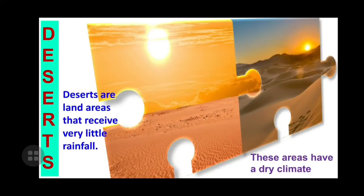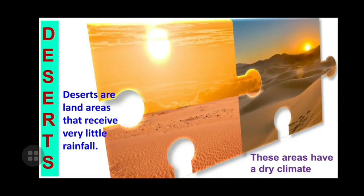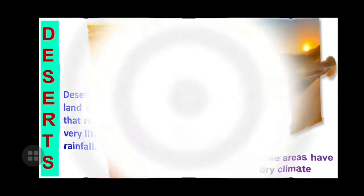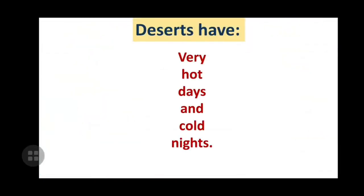Deserts are land areas that receive very little rainfall. These areas have a dry climate. From the name itself and from the location, you can assume that deserts receive very less amount of rainfall, and because of less rainfall, the area has a dry climate.